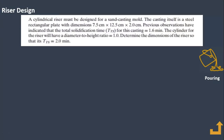We will start with a numerical problem: a cylindrical riser must be designed for a sand casting mold. The sand casting itself is a steel rectangular plate with dimensions 7.5 cm × 12.5 cm × 2 cm. Previous observations have indicated that the total solidification time for this casting is 1.6 minutes. The cylinder for the riser will have a diameter-to-height ratio equal to one, meaning equal diameter and height. Determine the dimensions of the riser.